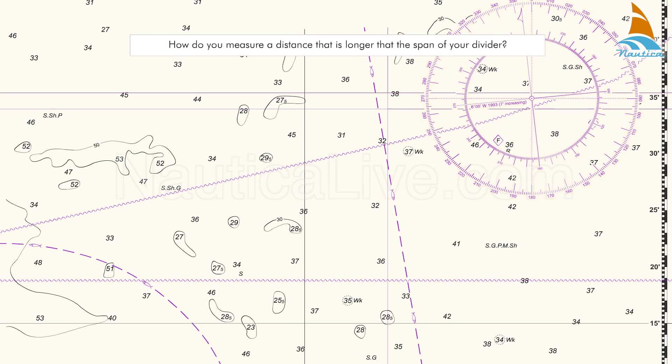How do you measure a distance that is longer than the span of your dividers? Assume that you're sailing from point A to point B.